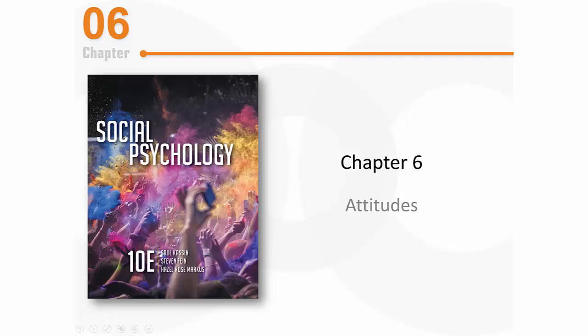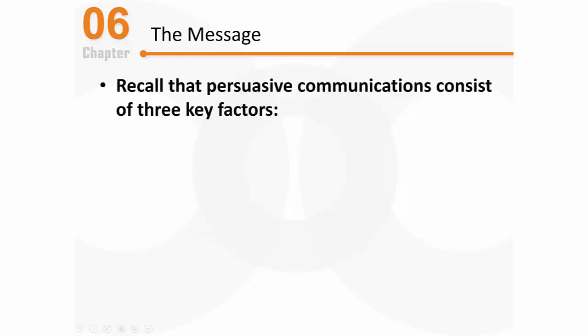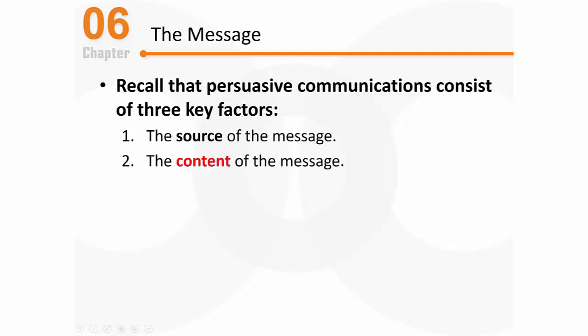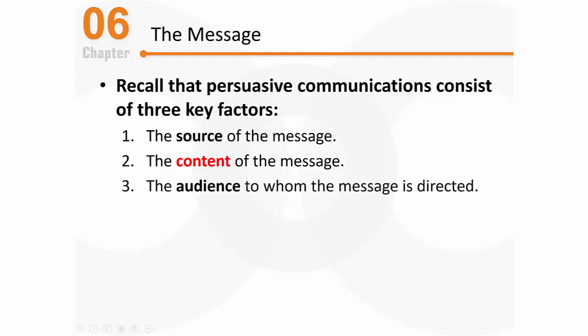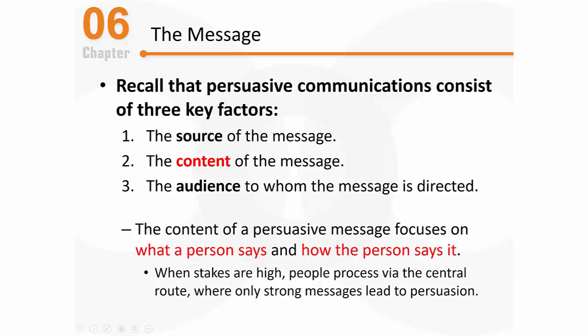Welcome back. Let's continue to talk about attitudes and persuasive communication. This time let's focus on the actual content of the message. Persuasion can be boiled down to who says what to whom — the source, the content, and the audience. We're focusing on what a person actually says and how they say it. When stakes are high and something is important, people process information via the central route, where only strong messages lead to persuasion.